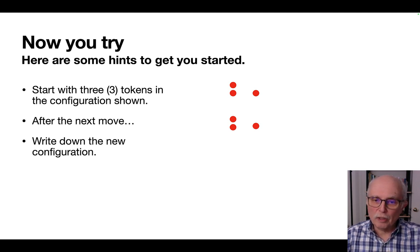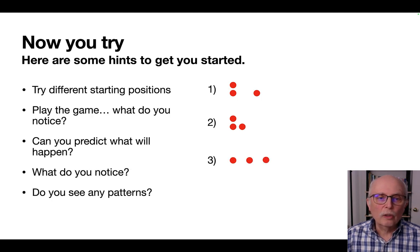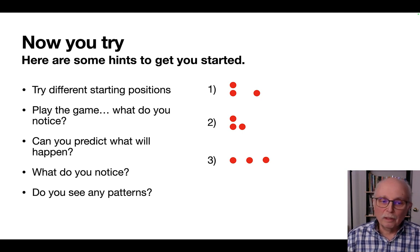Write down the new configuration, so you're writing down two of them. And record the pile numbers as we did from highest to lowest. Try different starting positions and play the game for each one. See what happens. Can you predict what will happen before you do it? What do you notice? Do you see any patterns?